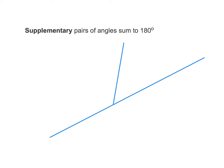The next pair of angles are supplementary pairs of angles, and they must add up to 180 degrees. This angle over here is 180 degrees — how do we know that? Well, it's a straight line. So therefore, angle A added to angle B must together add up to 180 degrees, and therefore form a straight line — that is what supplementary pairs of angles are.